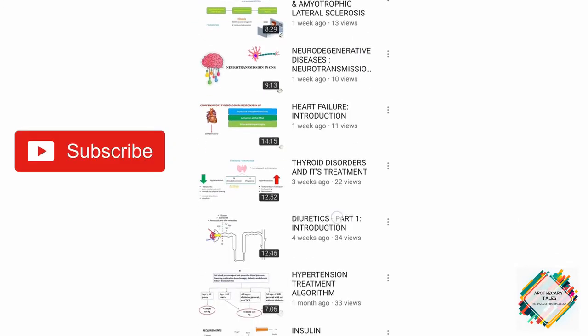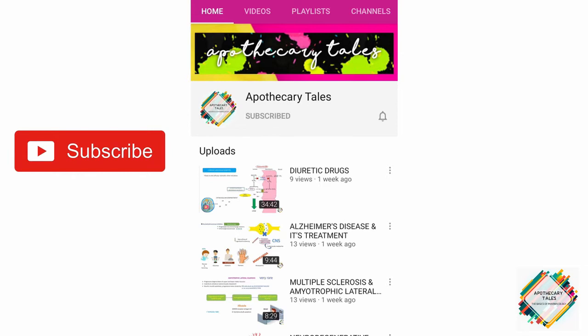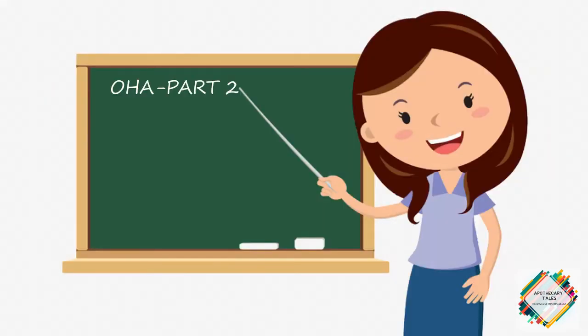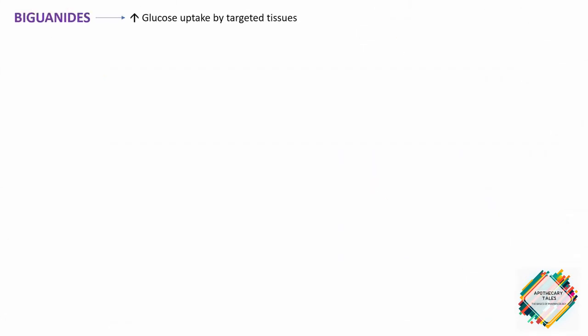Welcome everyone to the Apothecary Tales, the Basics of Pharmacology. Today we are going to talk about the biguanides. They are coming under the insulin sensitizers, meaning they improve insulin sensitivity — mainly by increasing the glucose uptake and utilization by target tissues, thereby reducing insulin resistance.